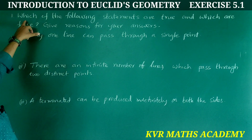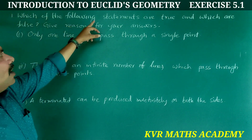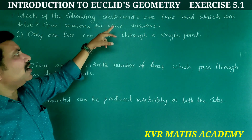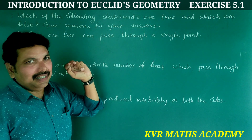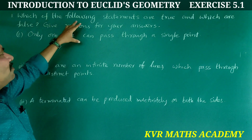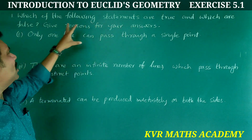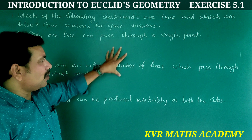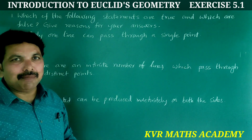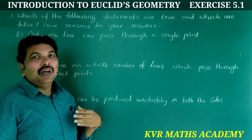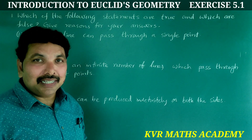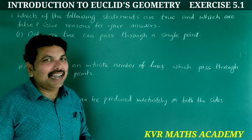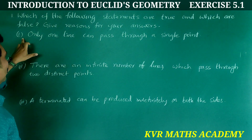This is the first question: Which of the following statements are true and which are false? Give reasons for your answers. There are a total of 5 statements. The first statement is: Only one line can pass through a single point.